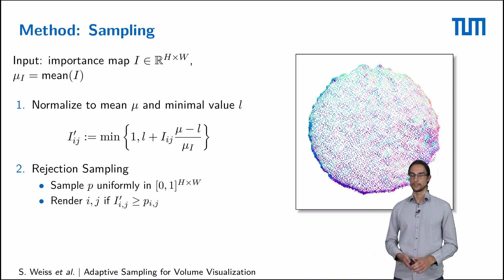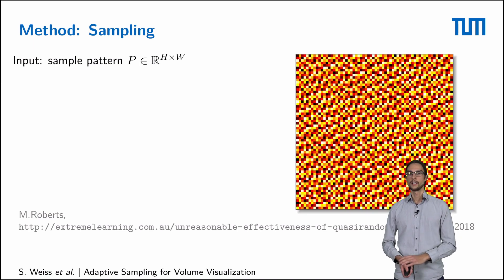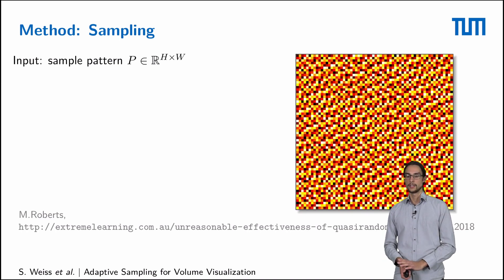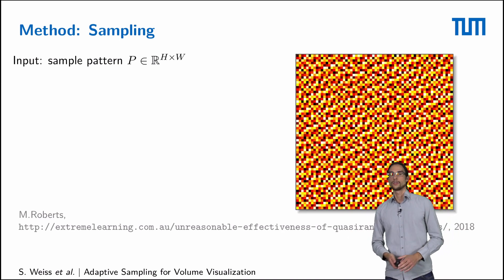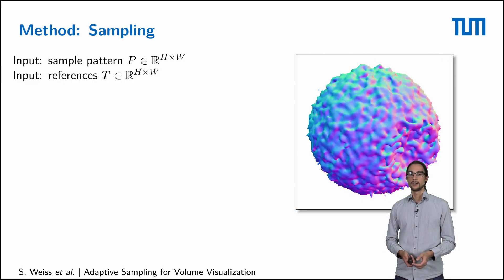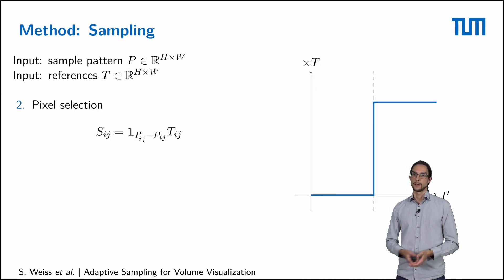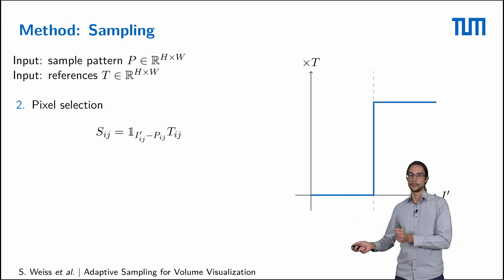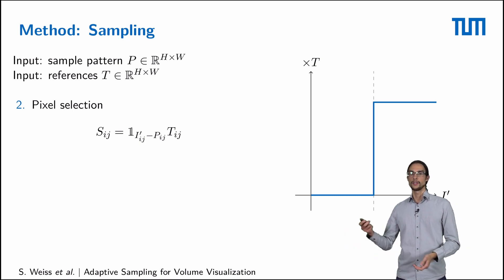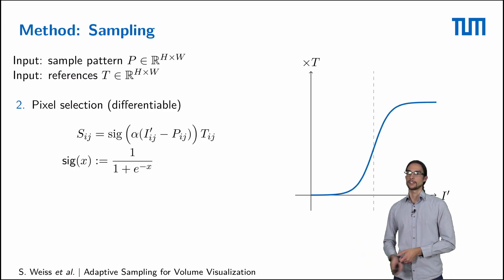However, this has two disadvantages. First, we show in the paper that it is advantageous to use a fixed sampling pattern based on a low-discrepancy sampler — more specifically plastic sampling as introduced by Roberts in 2018. To improve the training performance, we make use of the reference images in high resolution that are available for the supervised losses, and with this we can reformulate rejection sampling as a simple pixel selection via a step function. However, this is not differentiable. Therefore, during training we replace the step function with a smooth sigmoid function, where the hyperparameter alpha determines the steepness of the function.